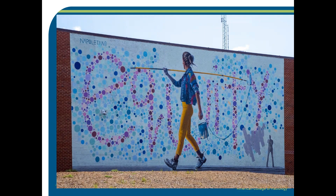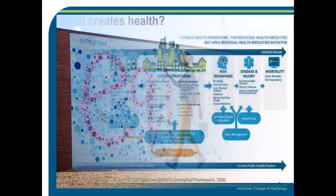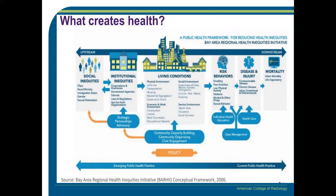Social determinants of health play a pivotal role in promoting health equity. Social determinants of health consist of environmental factors that can either improve or impede a person's health outcomes. Some examples of social determinants include educational and job opportunities, transportation access, and socioeconomic status.